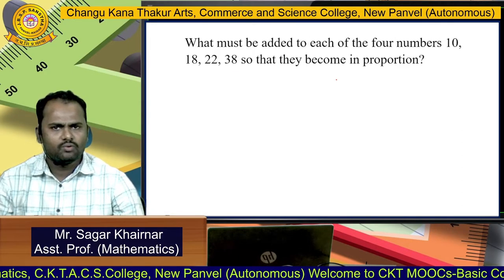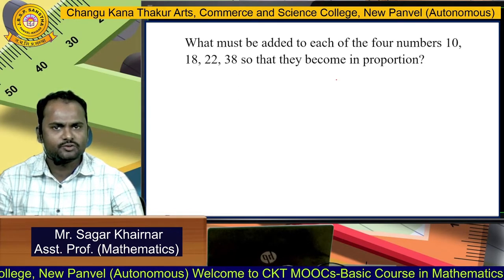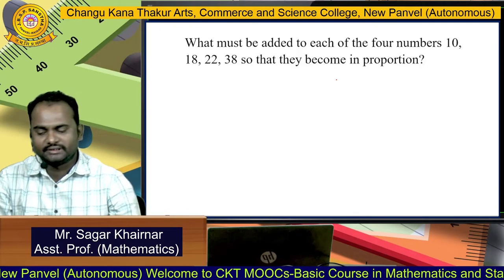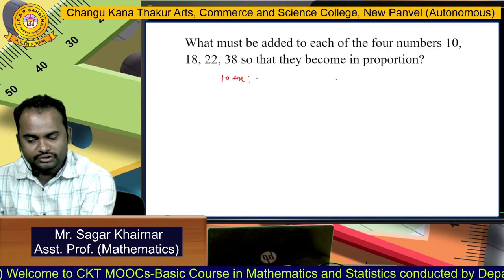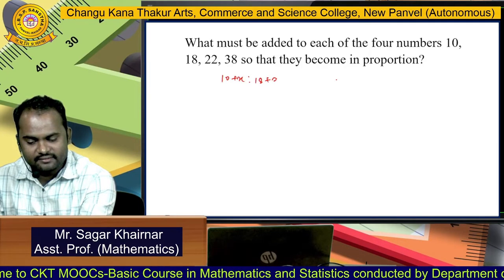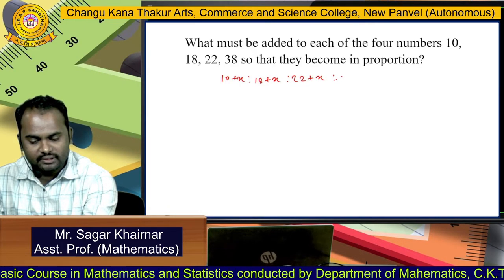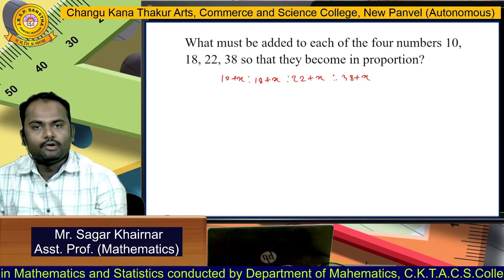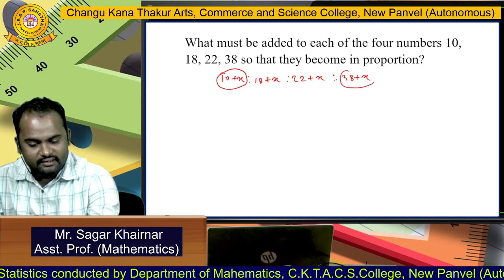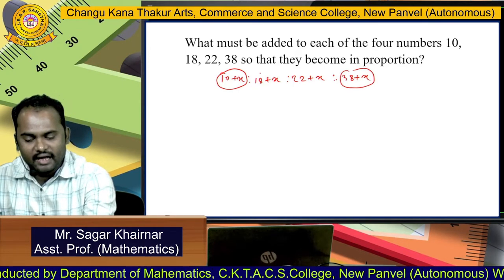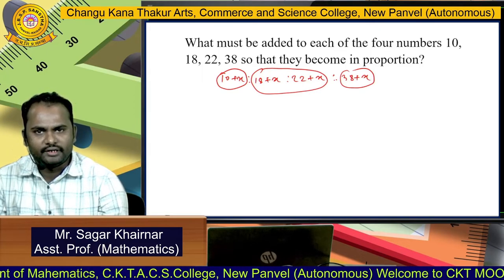Let us solve one more example: what must be added to each of the four numbers 10, 18, 22, 38 so that they become in proportion? We need to find X such that (10+X):(18+X) = (22+X):(38+X). Here 10+X and 38+X are the extremes, and 18+X and 22+X are the means.